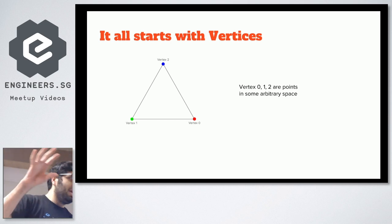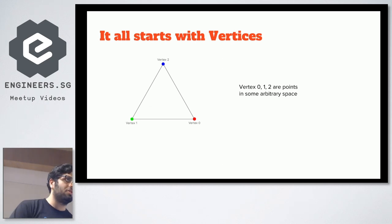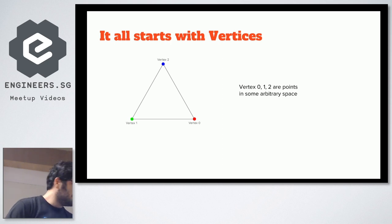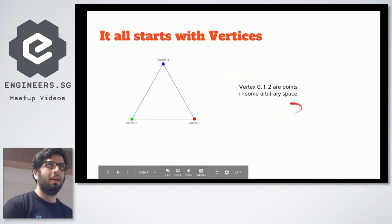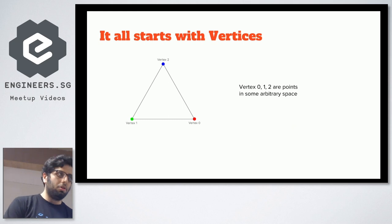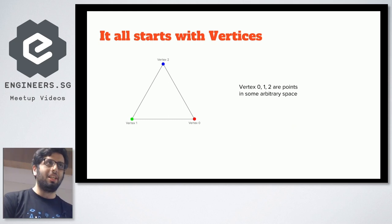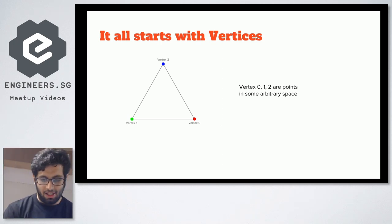The whole story for rendering starts off with these things called vertices. Vertices are just points in space. If you look at this triangle, it's composed of vertices 0, 1, 2 — just points in some arbitrary space. You don't really need to define what the space is. This could be your 3D model, for example, a model with a few million vertices representing your car or something. They're just points in this space.